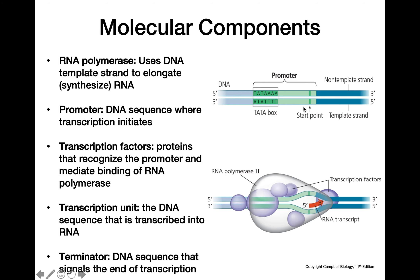When we reach the end of our transcription unit, we have a terminator. The terminator is a DNA sequence that tells the RNA polymerase that it has finished transcribing the entire gene — the entire transcription unit — and that the RNA polymerase can now dissociate from the DNA and go on to transcribe its next gene.